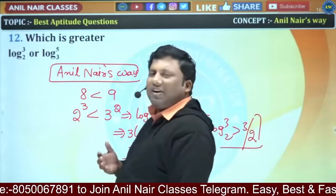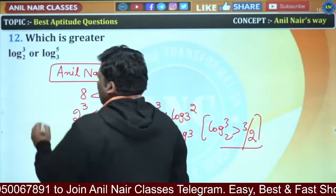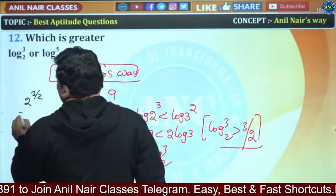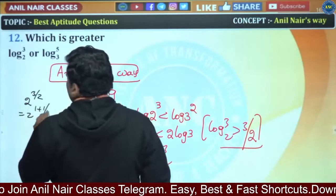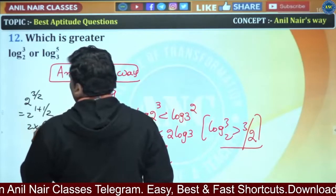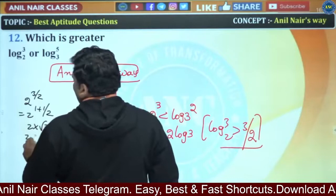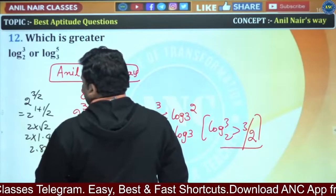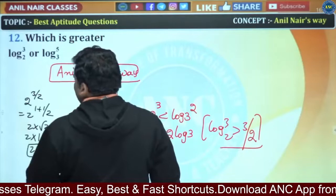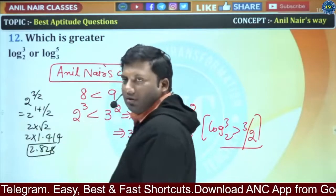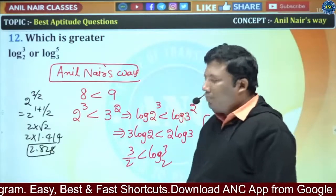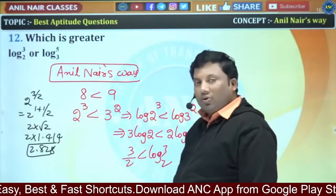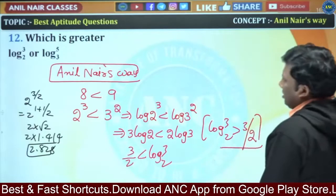Definitely it is greater than 3 by 2. So 2 power 3 by 2 — that is 2 power 1 plus 1 by 2, which is 2 into root 2. Root 2 is 1.414, so it is 2.828. Since 3 is greater than 2.828, we confirm 3 is greater than 2 power 3 by 2.